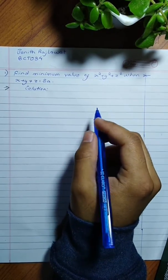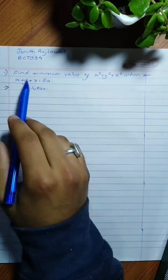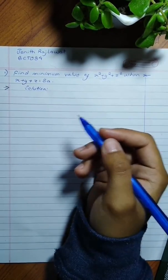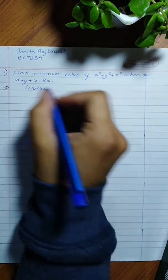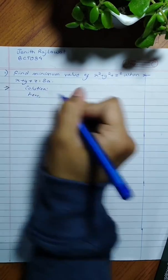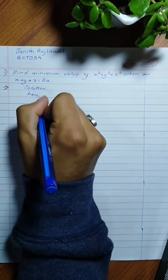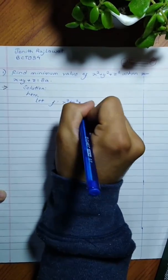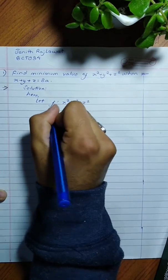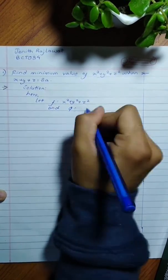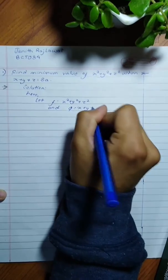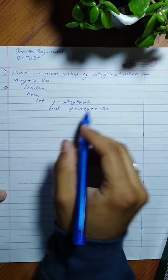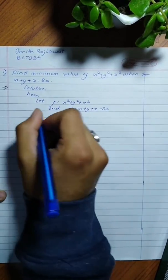It's impossible to find the value of these three variables using just this one condition. So we must use Lagrange's method. Let's do it together and find the unknown variable values. The given function is x squared plus y squared plus z squared, and the given condition is phi equals x plus y plus z minus 3a, taking 3a to the left side.